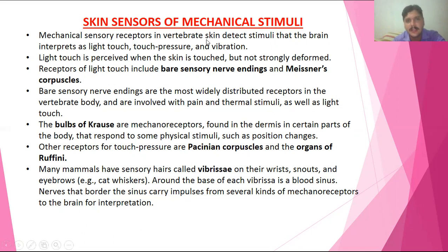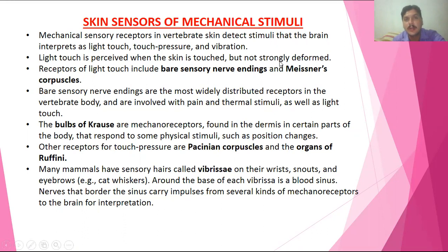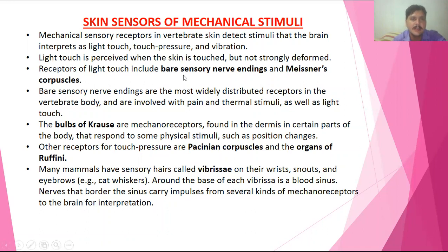Mechanical sensory receptors are present in the skin of vertebrates. The brain interprets stimuli such as light touch, touch pressure, and vibrations. To sense these mechanical stimuli, mechanical receptors are present in the skin. Light touch is perceived when the skin is touched but not strongly deformed. These are called bare sensory nerve endings or Meissner's capsules, present on the surface of the skin.